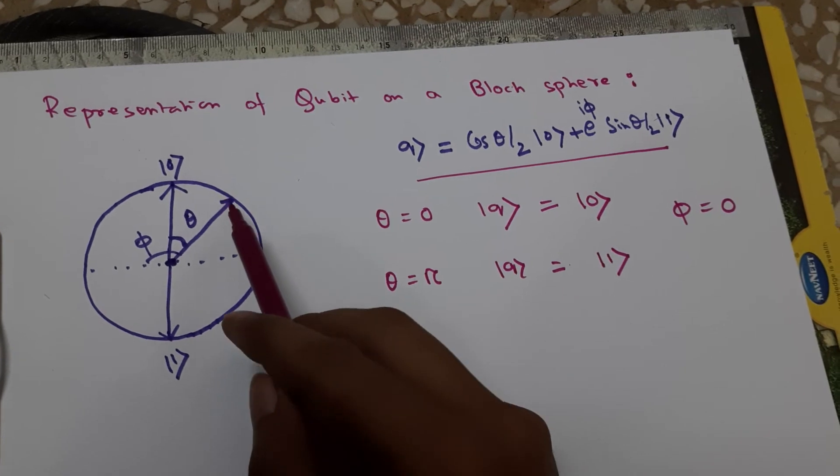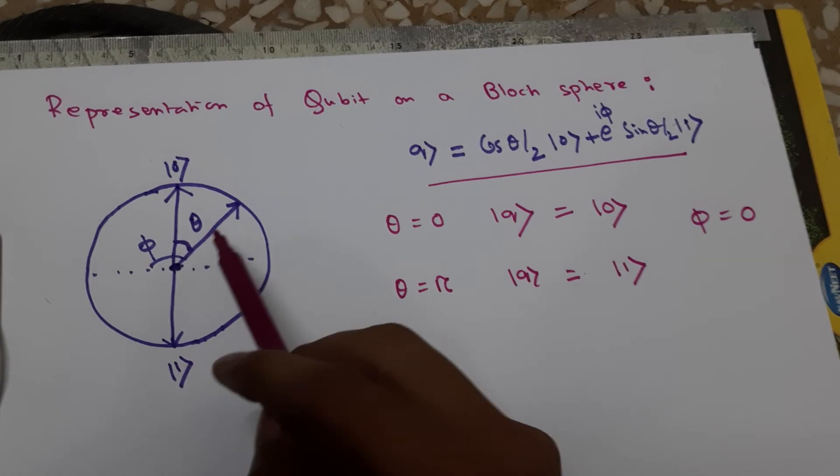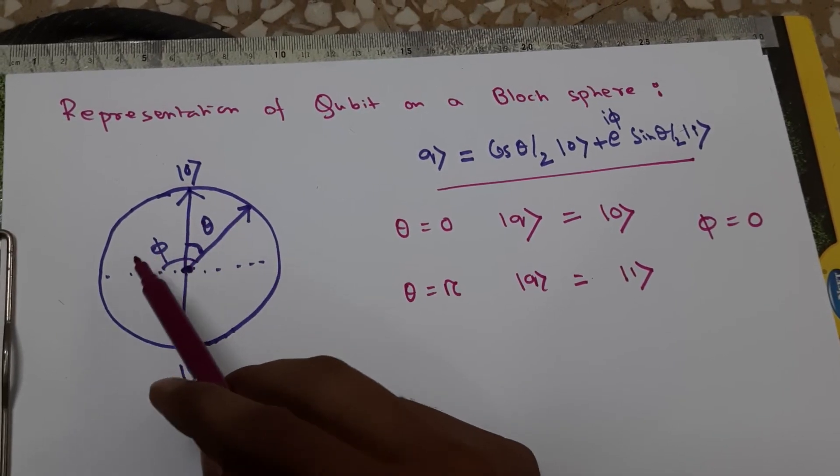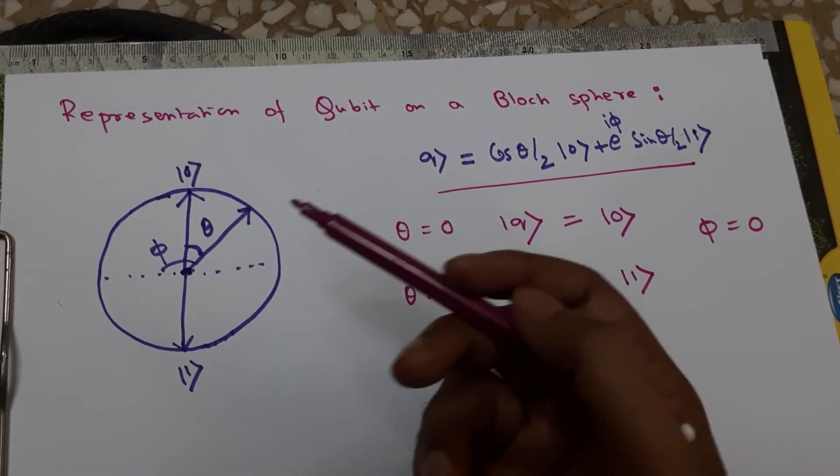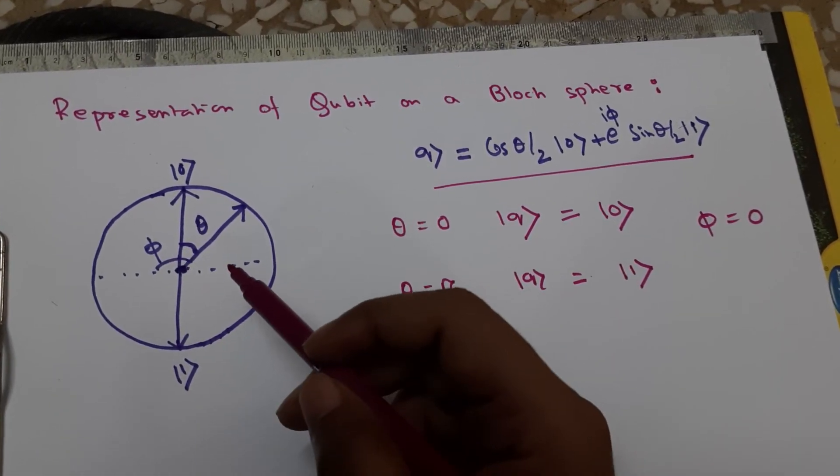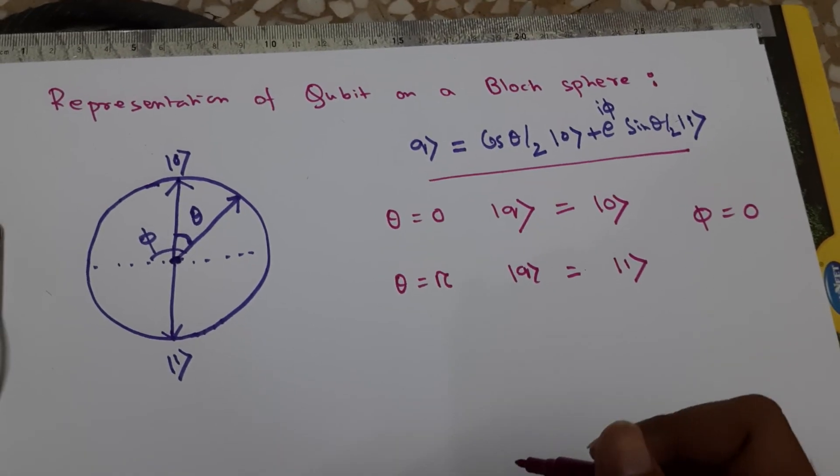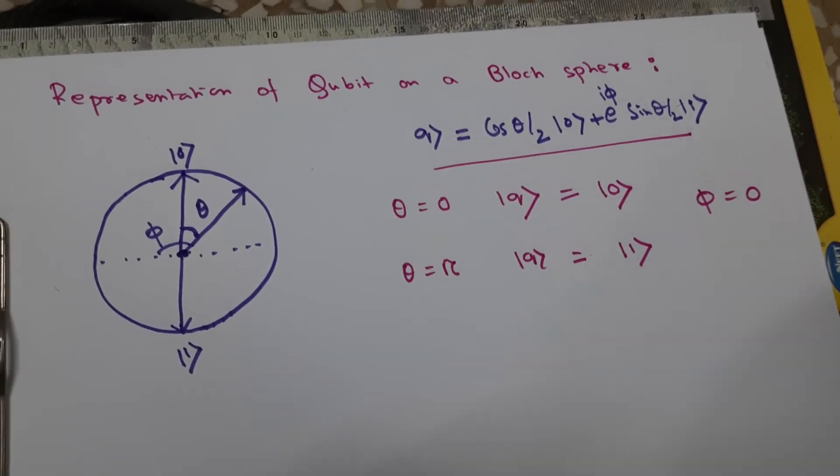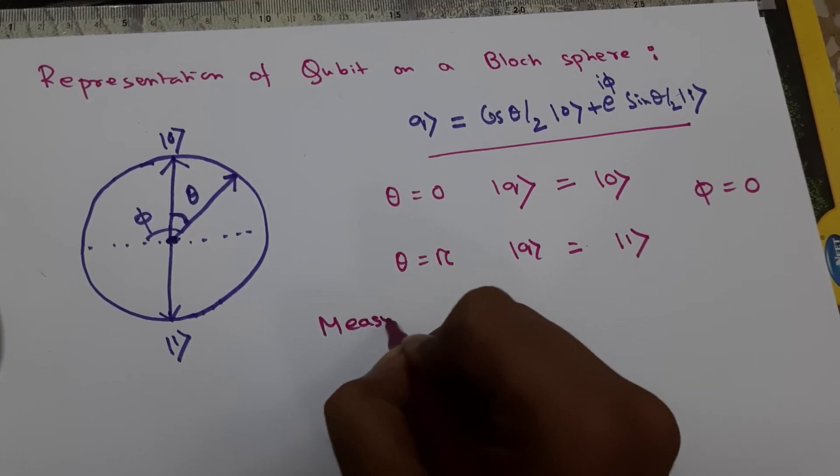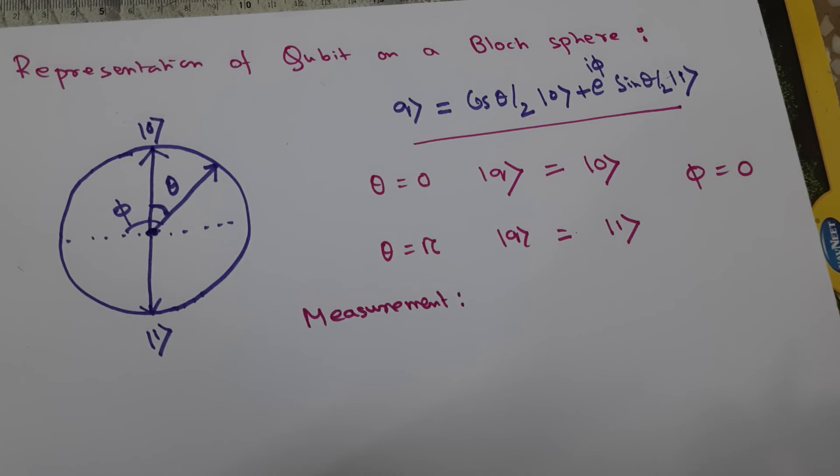Qubits are nothing but these dots on the sphere, and you can see there can be infinite possibilities of representation for a qubit.